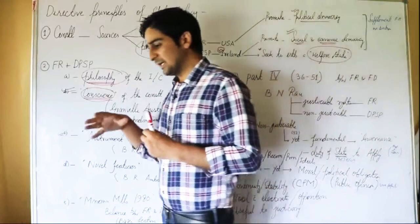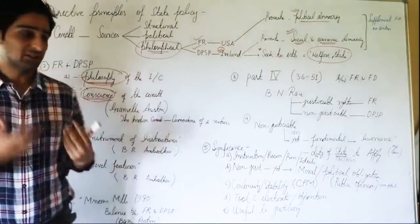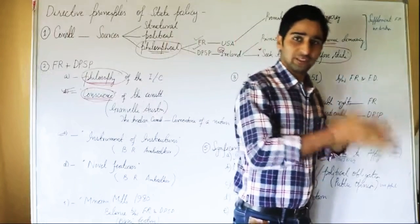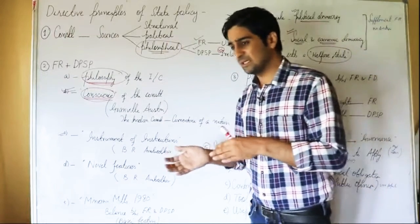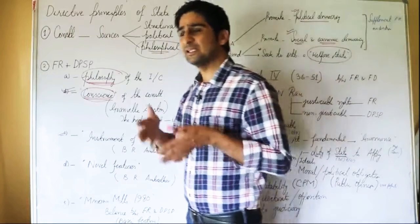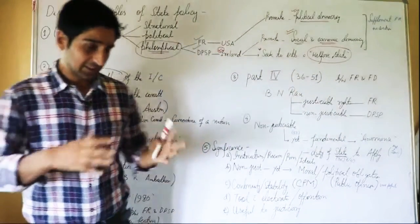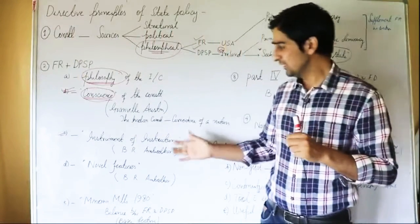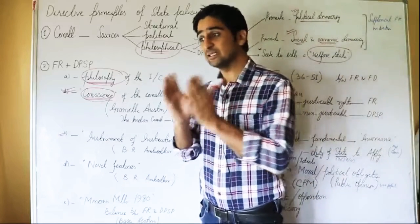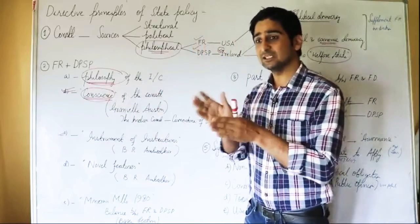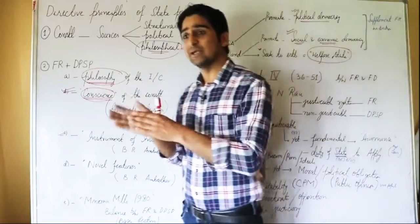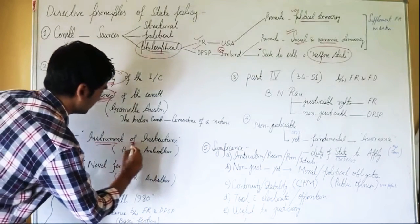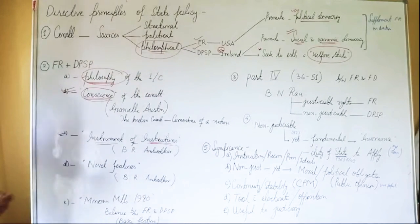The Government of India Act 1935 gave a provision about the instrument of instructions, which were instructions to the Governor General and the Governors of the colonies of India. B.R. Ambedkar says the Directive Principles of State Policy are like that instrument of instructions — the only difference is that the instrument of instructions was directed towards the Governor General and Governors, while these Directive Principles are directed towards the state, meaning the executive and the legislature.